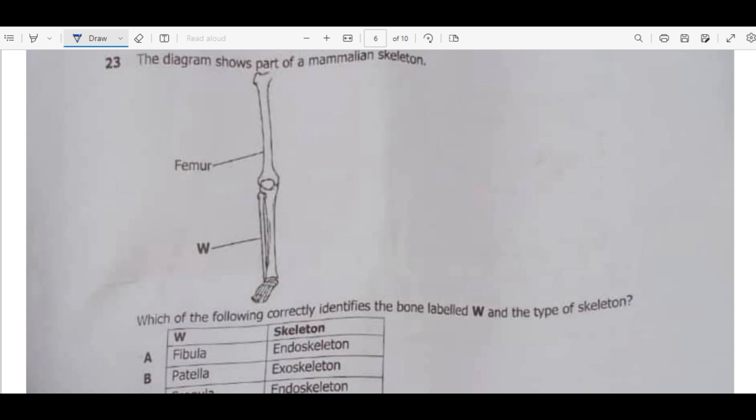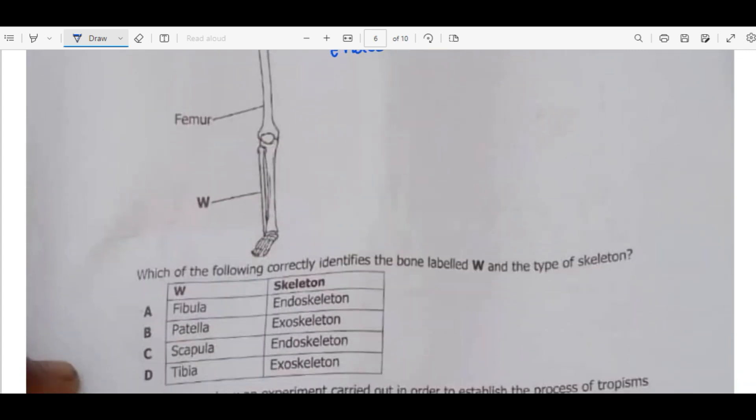Okay, we move on to question 23. The diagram shows part of the mammalian skeleton. Whenever we have a mammal, please remember that we are dealing with endoskeleton. All mammals consist of endoskeleton. Endoskeleton is just a type of skeleton that is found inside. Which of the following correctly identifies the bone labeled W and the type of skeleton? We are saying the type of skeleton is endoskeleton. So between A and B, we are going to have the correct one. So the answer is A because W is fibula. Then this one must be tibia. Patella is found on the knee.